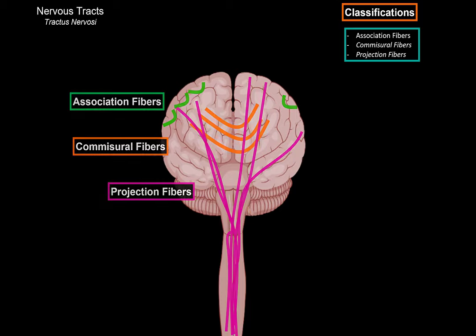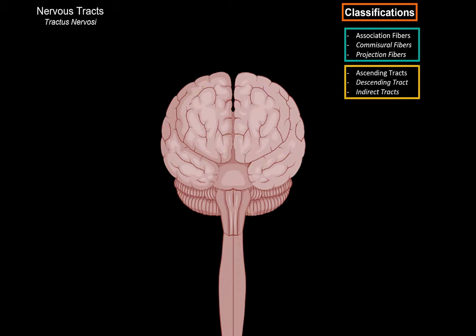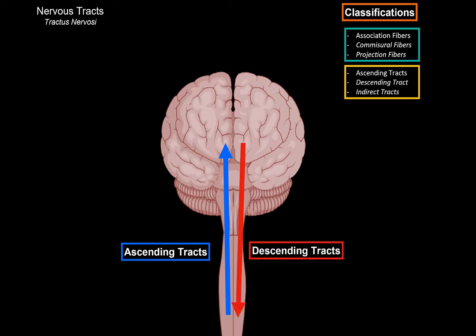But the most important thing to remember, which you'll hear a lot about, are ascending tracts, leading sensory fibers, descending tracts, leading motor fibers, and indirect tracts that interconnect different parts of the brain. This is just another way to classify nerve tracts. So that's all I had about nerve tracts for now.